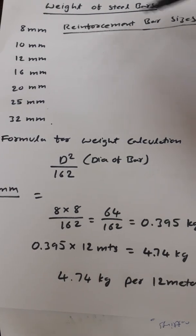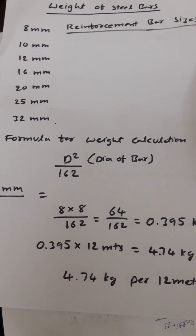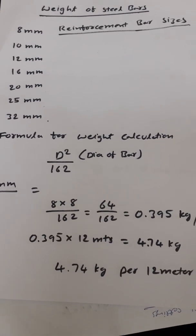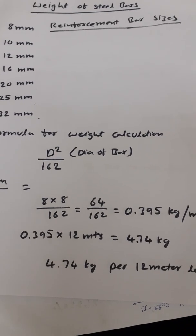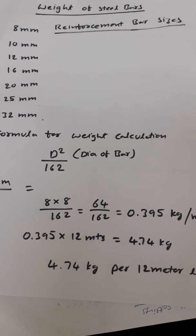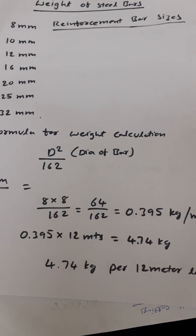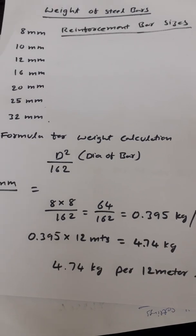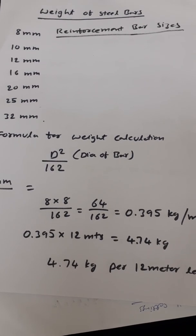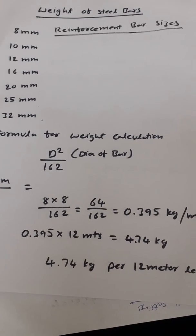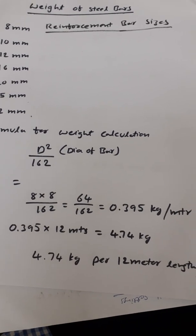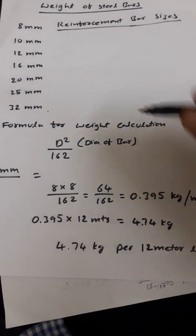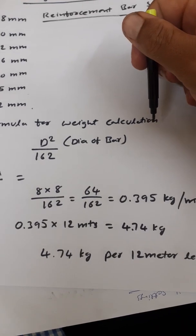Reinforcement bars are available in the market. When we are doing construction we need to buy steel, and we need to know the weight of the steel bar in order to buy it. We can order a certain number of 8mm, 10mm, and 12mm bars, and calculate the total weight beforehand so we can verify whether the weighing machine is weighing properly or not.